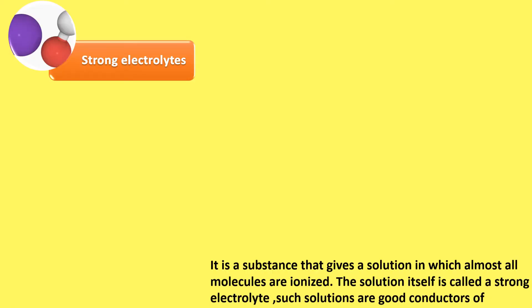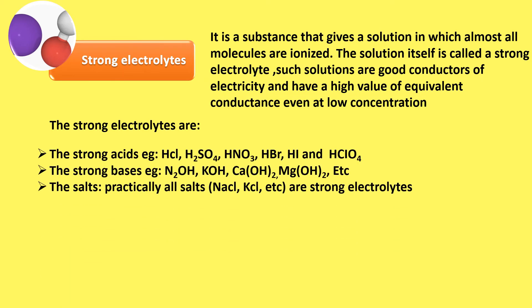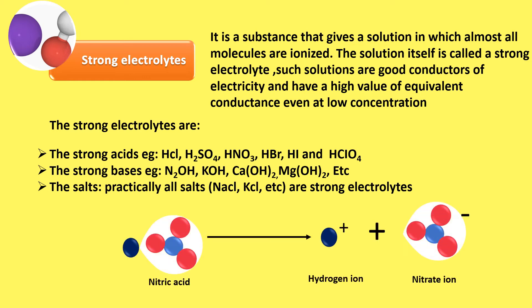A strong electrolyte is a substance that gives a solution in which almost all molecules are ionized. Such solutions are good conductors of electricity and have a high value of equivalent conductance even at low concentration. Strong electrolytes are further classified as strong acids, for example hydrochloric acid; strong bases, for example calcium hydroxide; and salts. Practically all salts, for example sodium chloride, are strong electrolytes, as whatever dissolves in water is completely ionized. For example, nitric acid in aqueous state dissociates to give hydrogen ion plus nitrate ion.